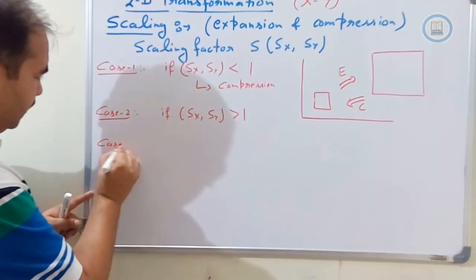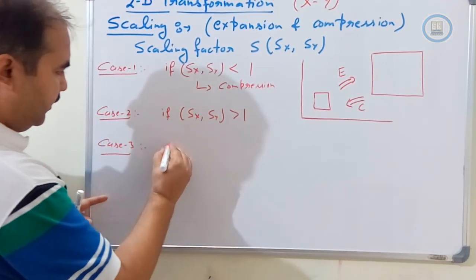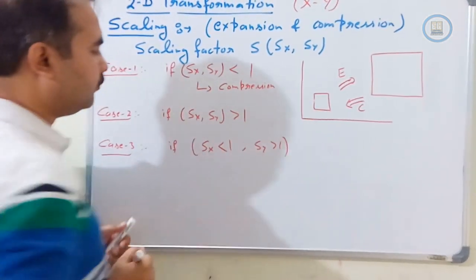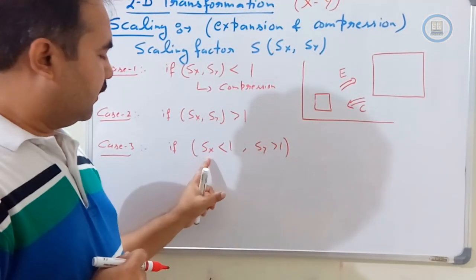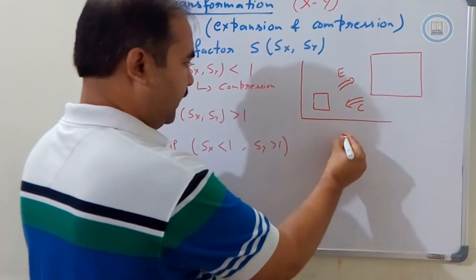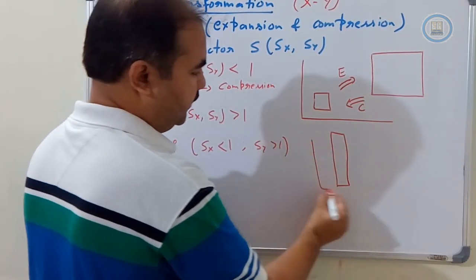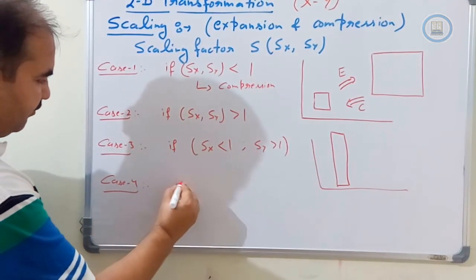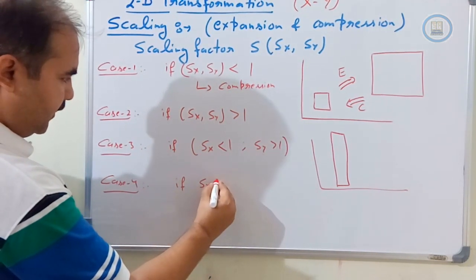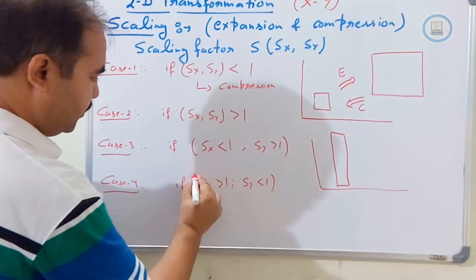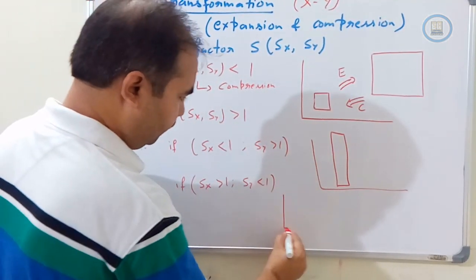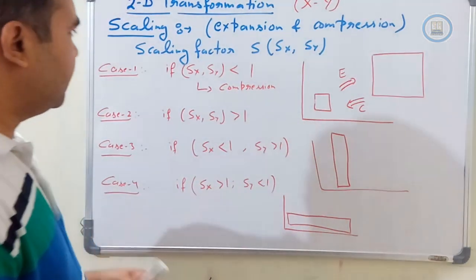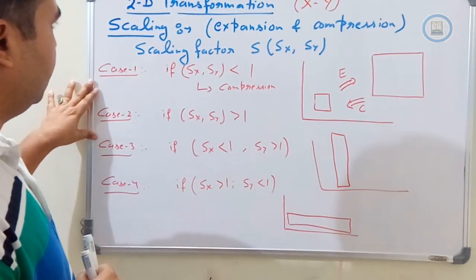The next case: if Sx is less than 1 and Sy is greater than 1, we get reduction in the x-direction and enlargement in the y-direction. These are the four possible cases in the scaling transformation operation. We are discussing two-dimensional transformation — we are not considering the z-axis or z-value.